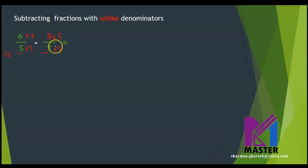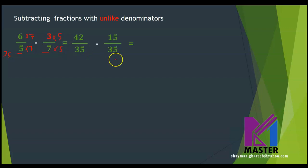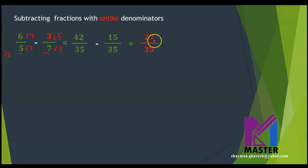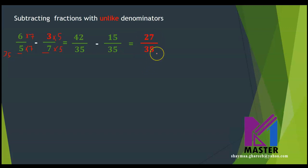The new fractions will be 6 times 7, which is 42 over 35, and the second fraction will be 15 over 35. Then I can do the subtraction normally: 42 minus 15 equals 27, so this fraction will be 27 over 35. Can I simplify this fraction? No — then this is the simplest form.